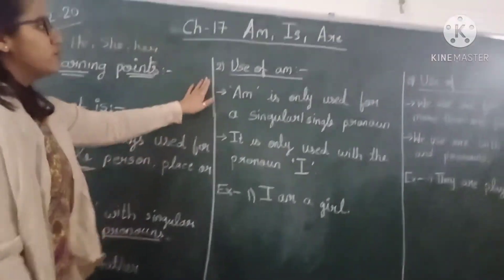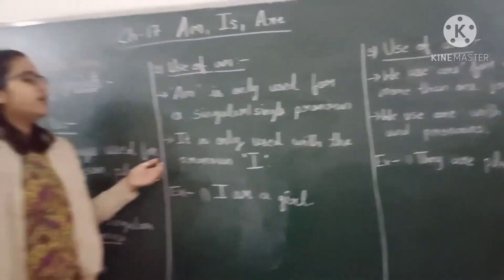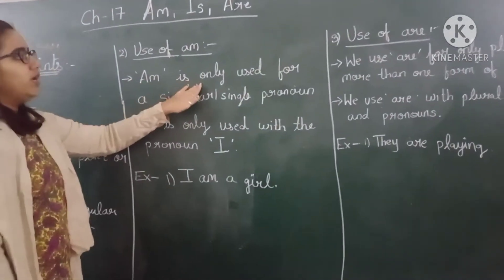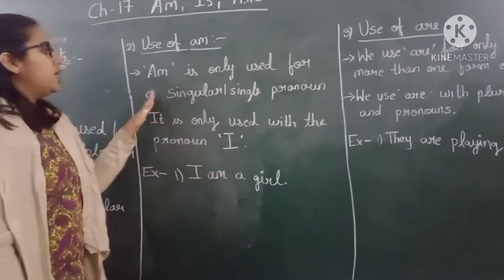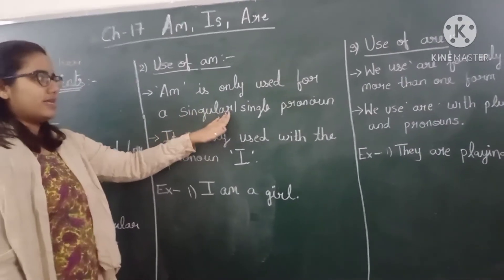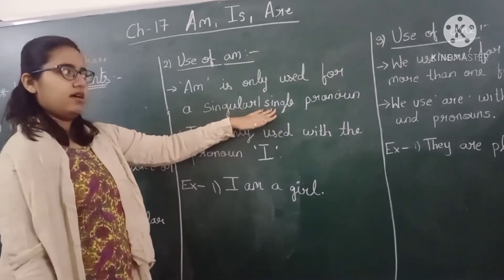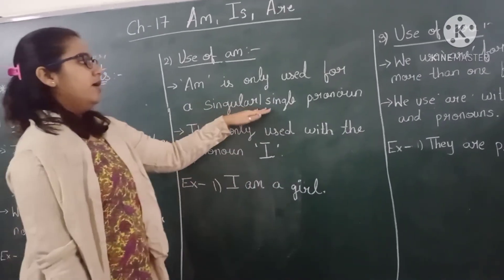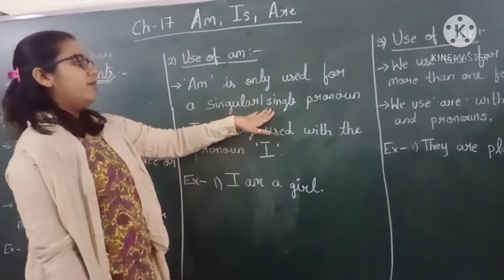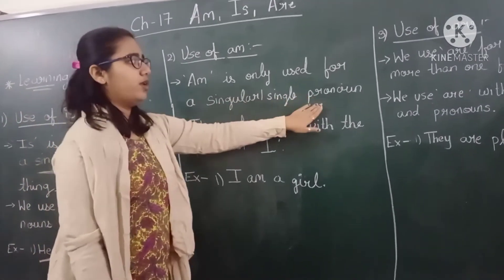Second learning point is the use of 'am'. 'Am' is only used for singular — S-I-N-G-U-L-A-R. Singular means what is single: a single person, name, animal, thing, or a single pronoun.